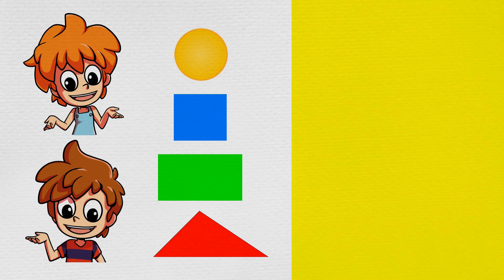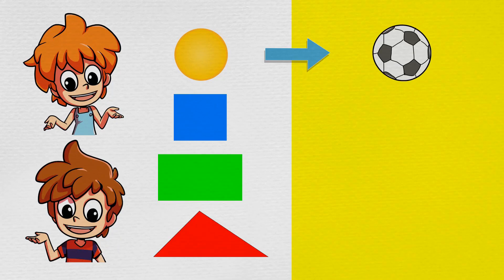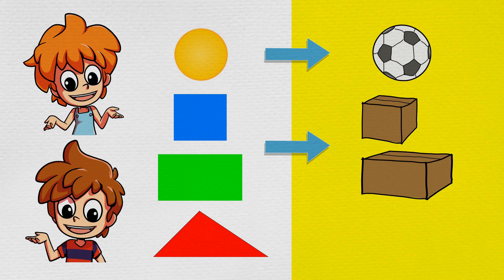The circle becomes a rolling ball. The square and rectangle become boxes. And the triangle becomes a pointy pyramid.